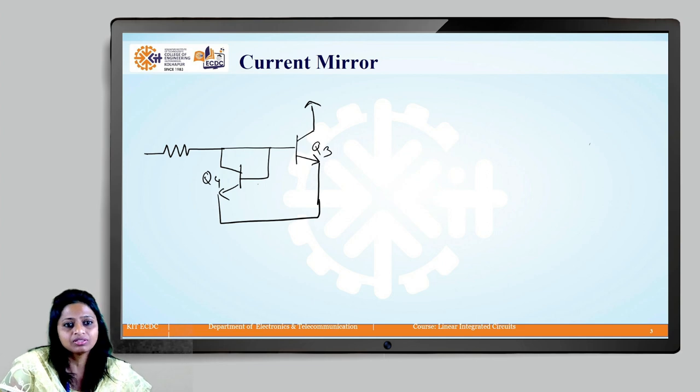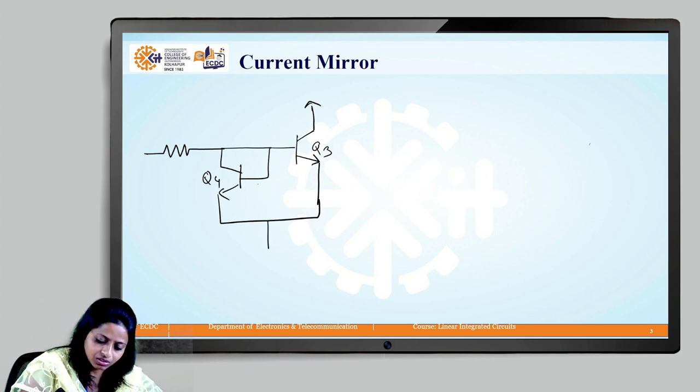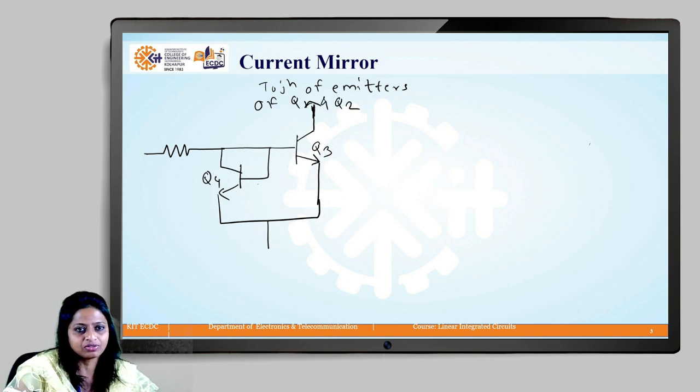This circuitry will be connected at the emitter side of the differential amplifier. This collector terminal of Q3 will go to the junction of emitters of Q1 and Q2 which are there in the differential amplifier.